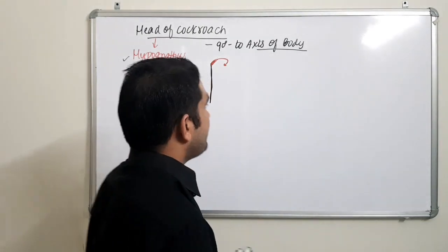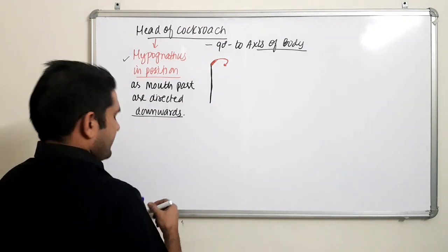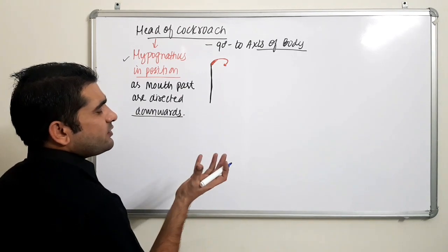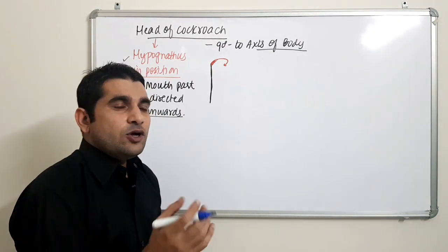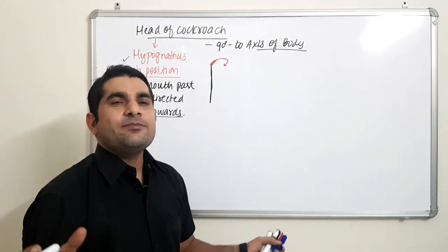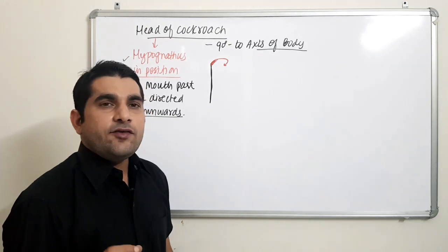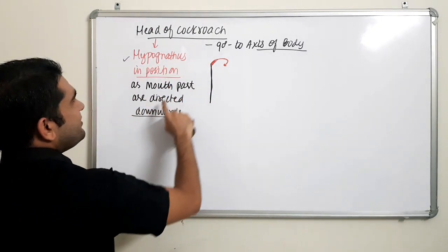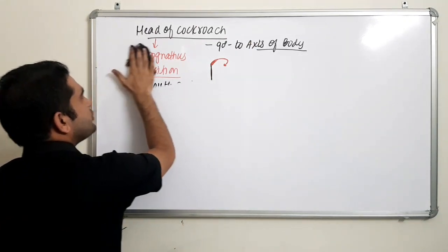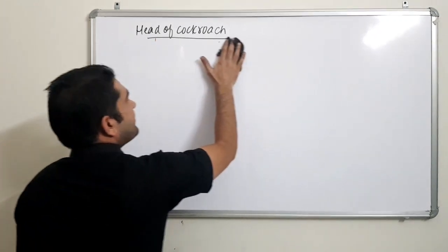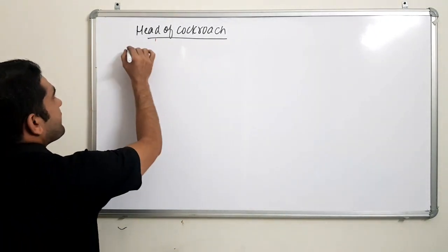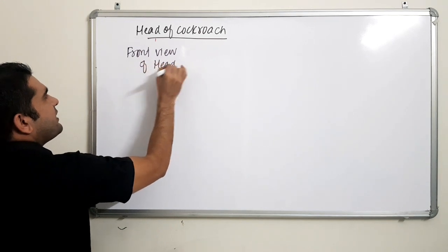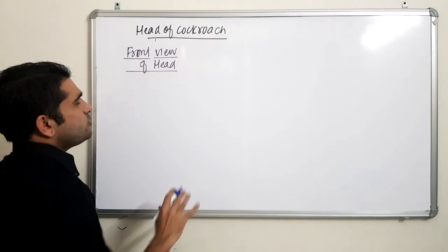So the head of cockroach is hypognathous. Now, if we talk about embryological development — how many segments are present in the head of cockroach during embryonic stage? The answer is six. Six segments were there; six sclerites fuse to form the complete head capsule. Let me show you the front view and I will also point out the six sclerites — six chitinous plates that fuse to form the entire head capsule. First, the front view, and after that the side view.